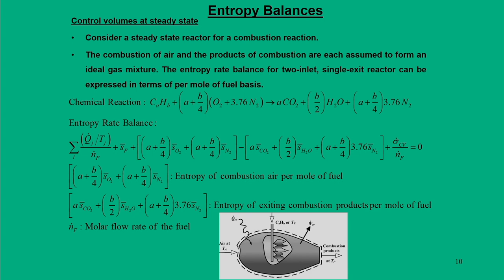When entropy information is known, we can perform an entropy balance. There are two types of entropy balance equations: one for a control volume at steady state, and one for a closed system. For a steady-state reactor in a combustion system, air and combustion products are each assumed to form ideal gas mixtures. For a two-inlet, single-exit reactor system expressed per mole of fuel, a chemical reaction takes place where fuel and air mix in appropriate molar ratios to produce CO2, H2O, and N2 with their respective molar components. We then find the entropy balance, which includes entropy through heat transfer at a given temperature per mole of fuel.